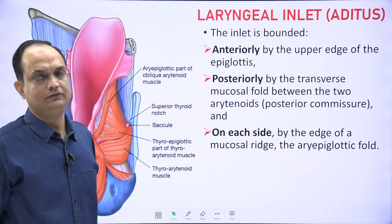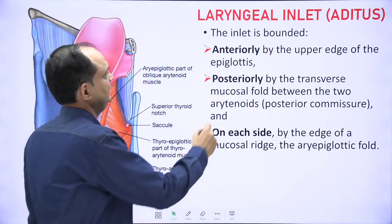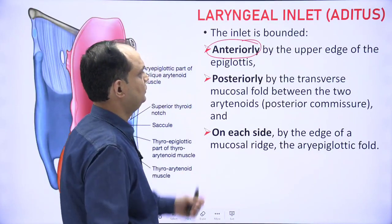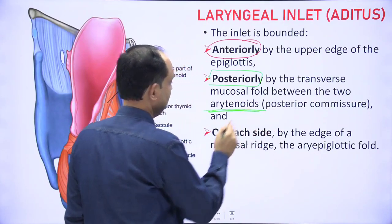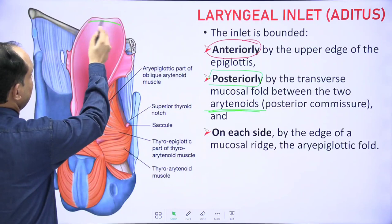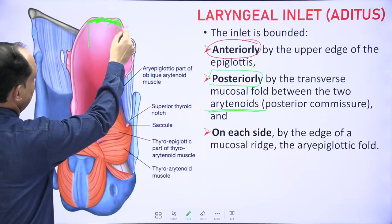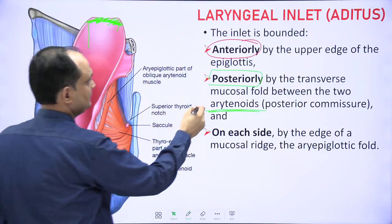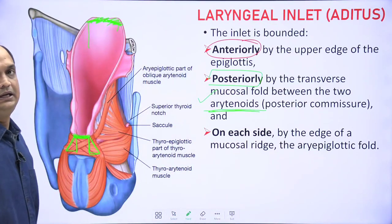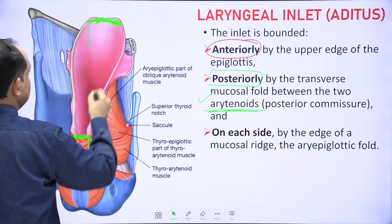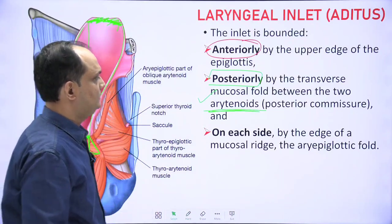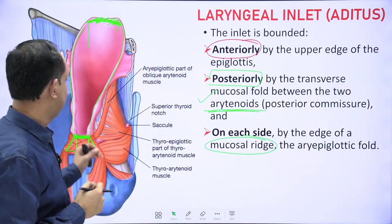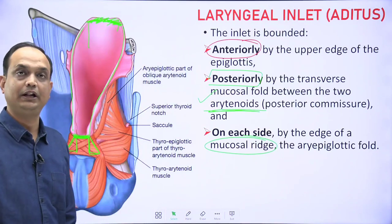What are the boundaries of the laryngeal inlet? Anteriorly it is bounded by the edge of the epiglottis. Posteriorly it is bounded by the transverse mucosal fold between the two arytenoid cartilages. In the diagram, the anterior wall is bounded by the epiglottis and the posterior wall by the two arytenoid cartilages. On the sides, the edge of the inlet is the aryepiglottic fold — a mucosal ridge — and below this ridge lie the aryepiglottic muscle fibers.